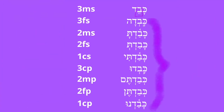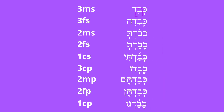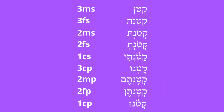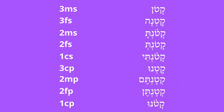Note the changes for tsere and holum stative verbs. Tsere, for the most part, will change to a patah, except for the third masculine singular. It really just follows the Qal perfect paradigm we've already learned all the way down with the patah, except the third masculine singular retains the tsere. For holum statives, the holum is retained unless the first syllable is closed and ends in a silent sheva. One other note on the holum stative class: in the second person plural, whether masculine or feminine, the holum changes to qamets hatuph. We know it's qamets hatuph because it's a closed, unaccented syllable without a metheg.